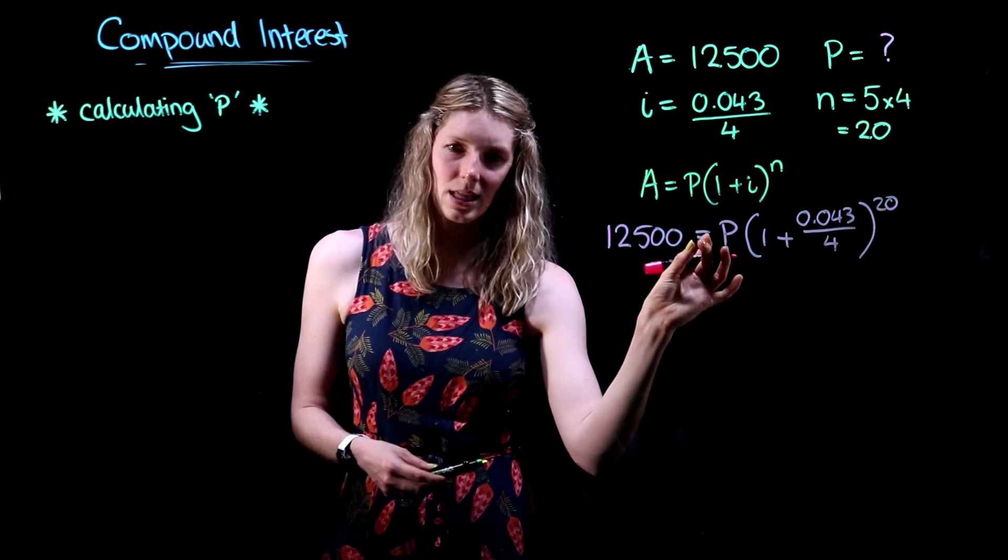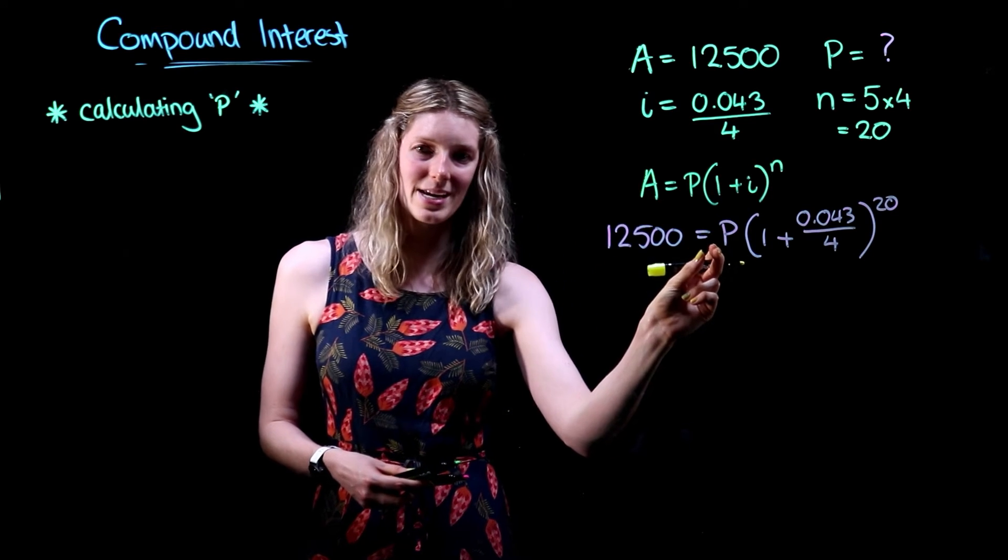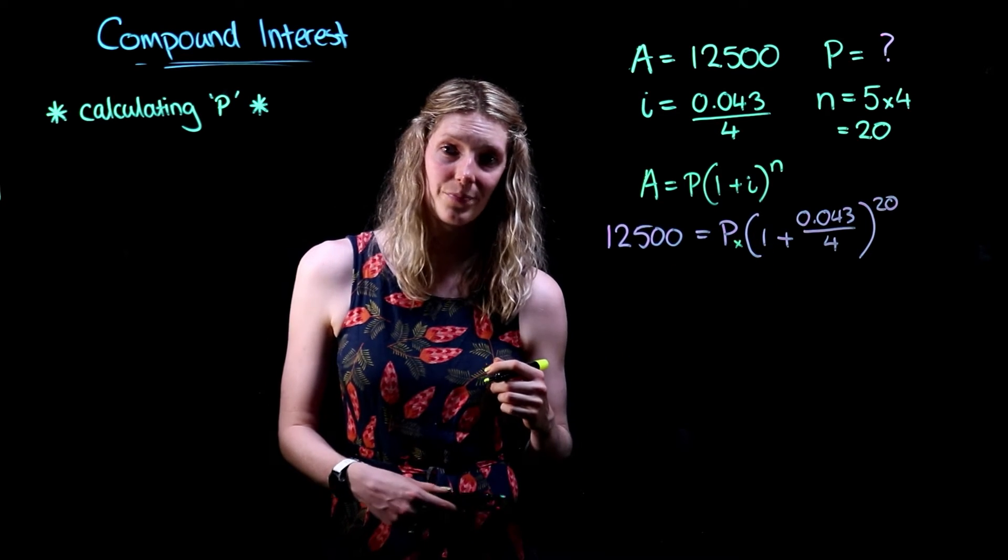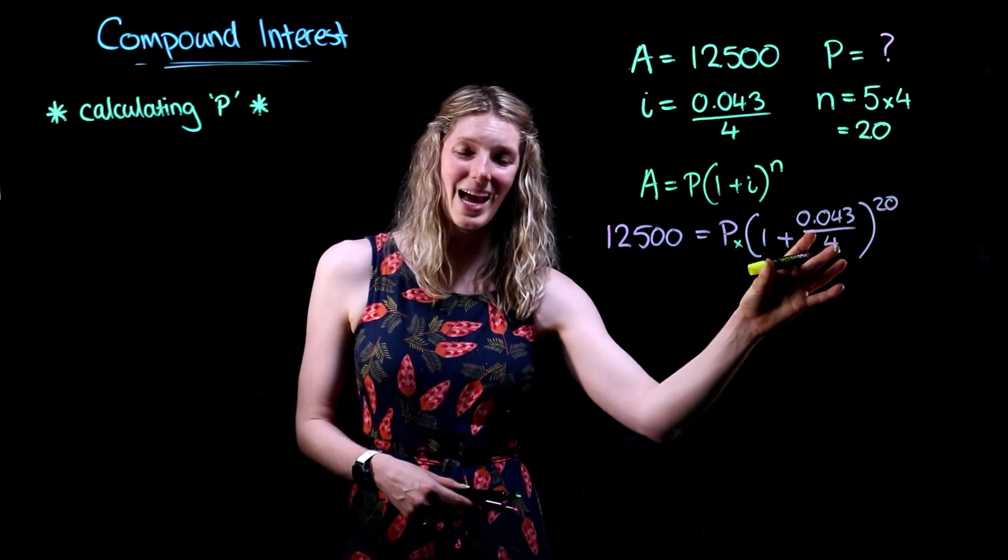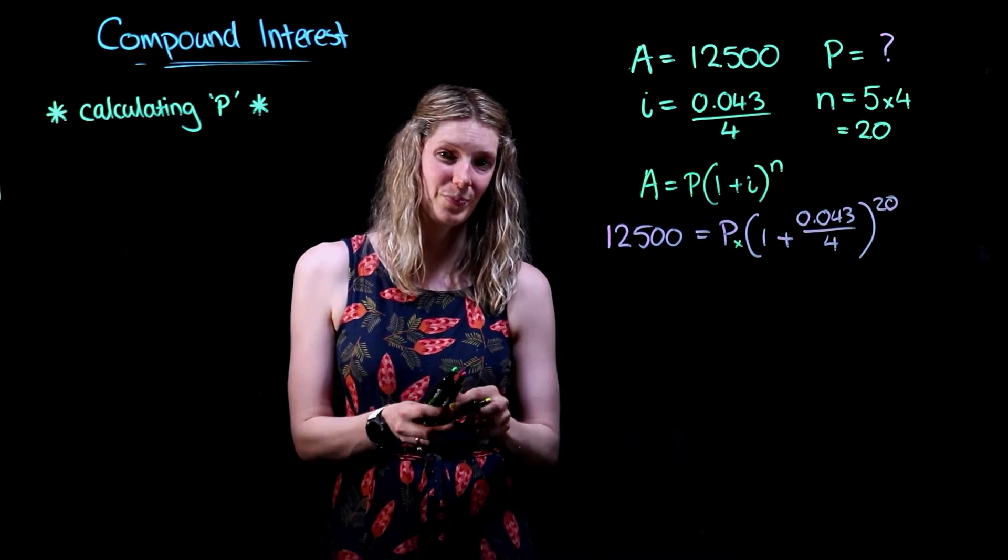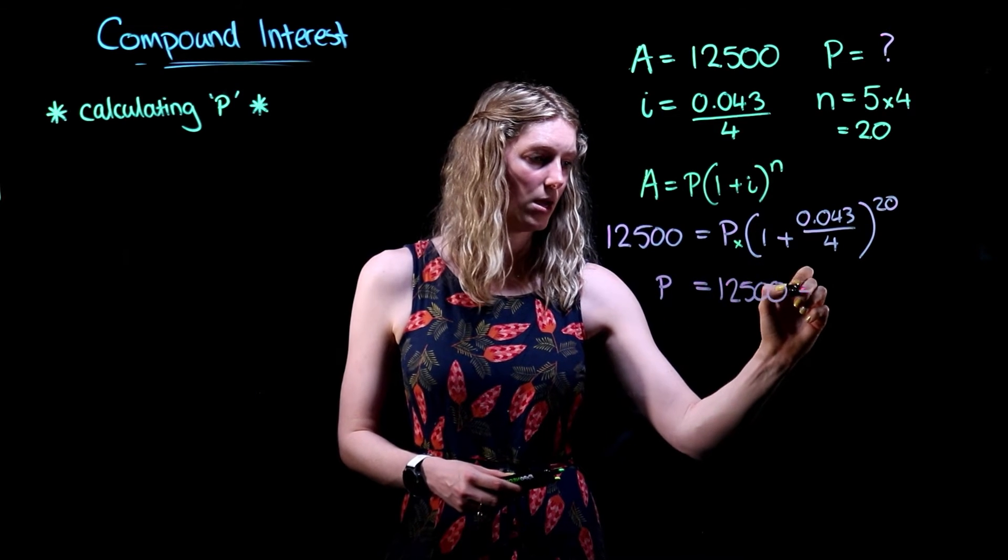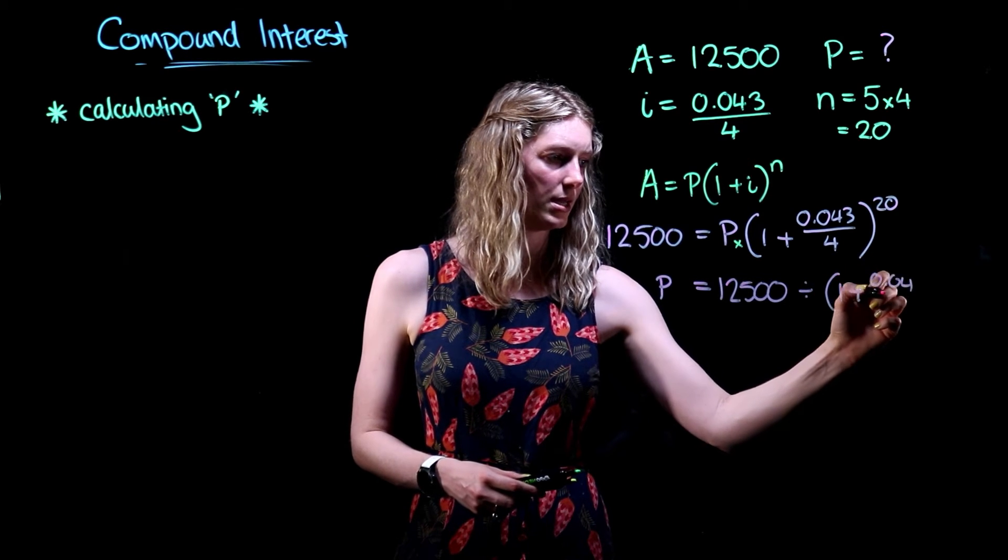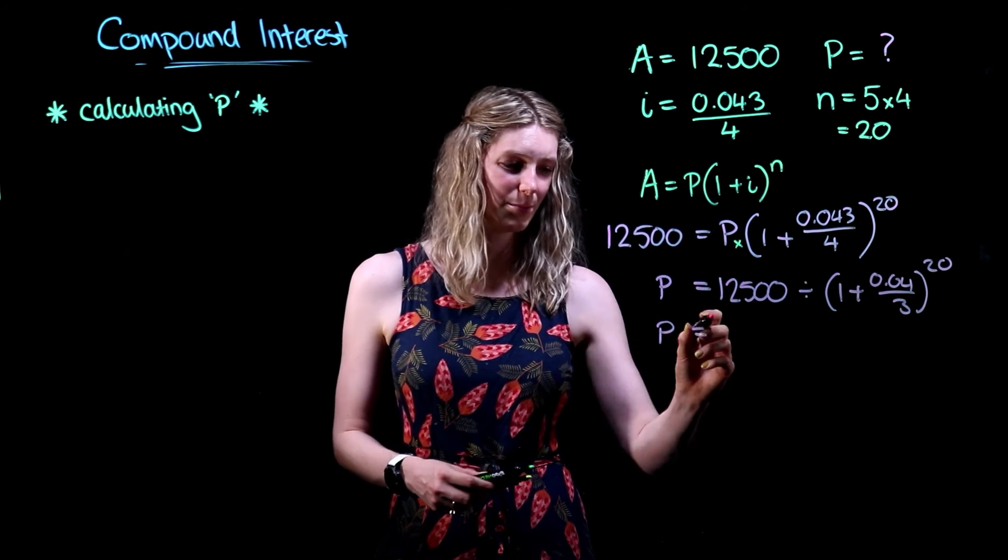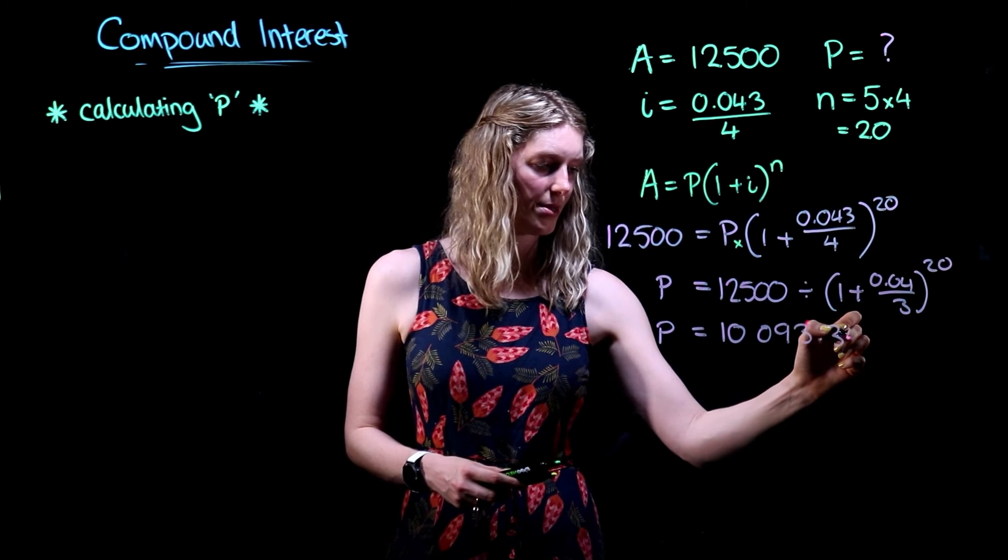Now we want to isolate this variable P. The easiest way to do this is to remember that this variable P is joined to this expression with the brackets by a multiplication sign. So we can take this entire expression here and take it away from the variable P by dividing both sides by this expression. This is what it's going to look like before you put it into your calculator: we're going to have 12,500 all divided by this expression in the brackets. Typing that in, it gives us a principal amount of 10,093 dollars and 34 cents.